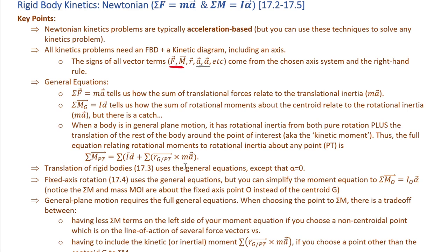We're used to picking up signs on forces from statics, but now acceleration terms also need their signs determined from the axis system — so include your axes on your free body and kinetic diagrams; it's a required piece. From Newton's second law: sum of forces equals mass times acceleration, and the rotational version — sum of moments about the centroid equals mass moment of inertia I-bar times angular acceleration alpha. When a body is in general plane motion and you sum moments about a non-centroidal point, you pick up what's called the kinetic moment term.